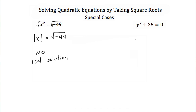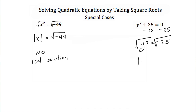This can happen when you're dealing with a quadratic as well. If we have y squared plus 25 is equal to zero, our first step is to get y squared alone by subtracting 25 from both sides, giving us y squared is equal to negative 25. Square rooting both sides gives the absolute value of y equal to the square root of negative 25. Since you cannot take the square root of a negative number, this equation also has no real solutions.